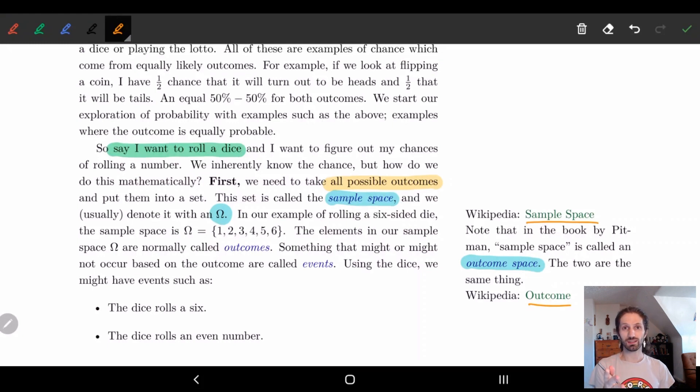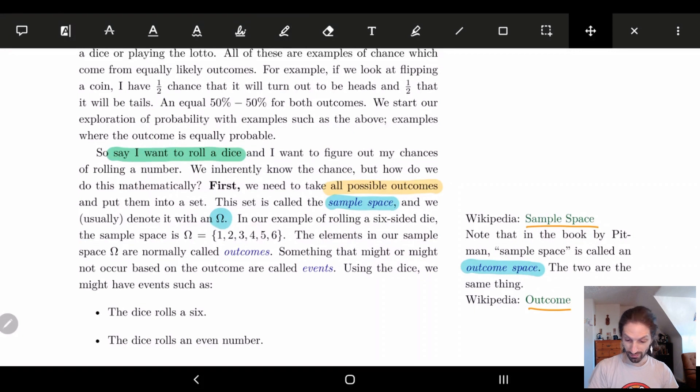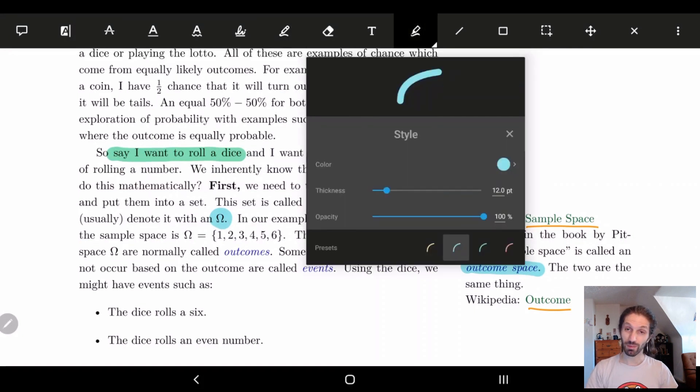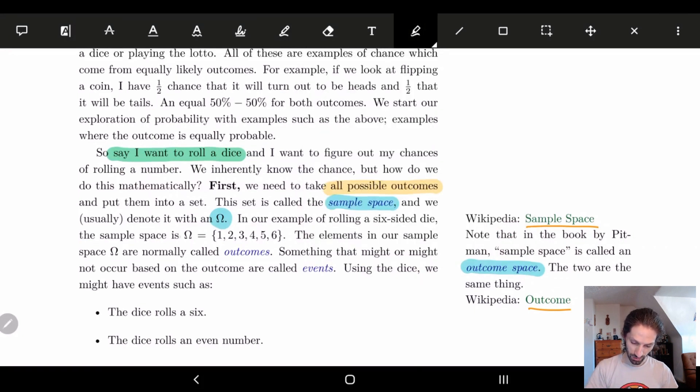When we roll a six-sided dice, what are our potential outcomes? We have the number one, the number two, the number three, the number four, the number five, and the number six. So we have six different outcomes. That's the definition of an outcome, some element in our set. Here we have six different outcomes in our sample space.